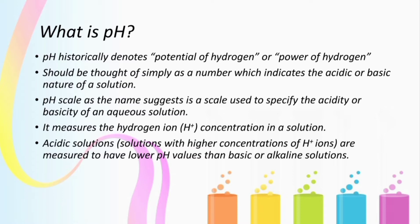pH scale, as the name suggests, is a scale used to specify the acidity or basicity of an aqueous solution. It measures the hydrogen ion concentration in a solution. Acidic solutions are measured to have lower pH values than basic or alkaline solutions.